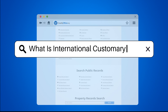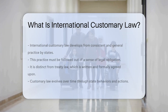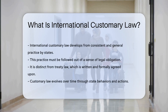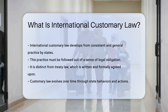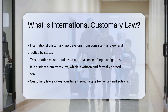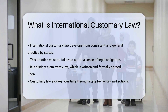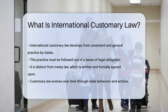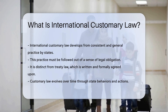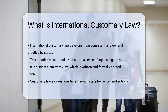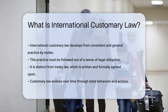What is international customary law? International customary law develops from consistent and general practice by states. This practice must be followed out of a sense of legal obligation. It is distinct from treaty law, which is written and formally agreed upon. Customary law evolves over time through state behaviors and actions.